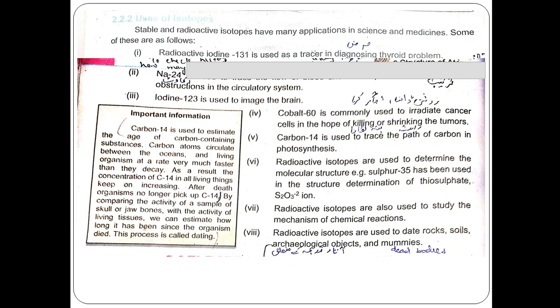Carbon-14 is used to trace the path of carbon in photosynthesis. Radioactive isotopes are used to determine molecular structure; for example, sulfur-35 has been used in the structure determination of thiosulfate (S₂O₃). Radioactive isotopes are also used to study the mechanism and rate of chemical reactions.